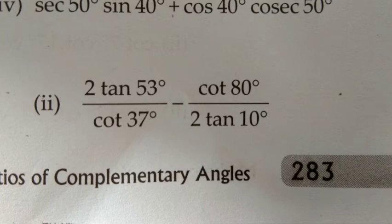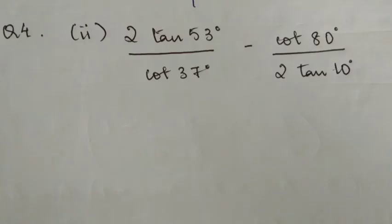Sub-number 2: 2 tan 53° divided by cot 37° minus cot 80° divided by 2 tan 10°. Now, tan and cot, when you look at 53° and 37°, if you add them together you get 90°.